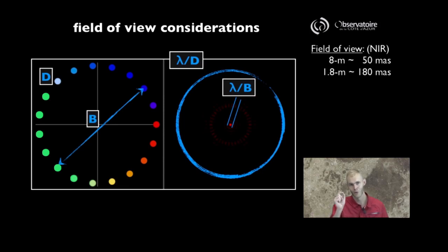And we can see that the core of that, we can even go as far as calling it a PSF, a point spread function, is of characteristic size lambda over B.